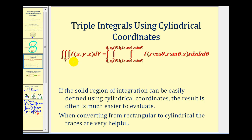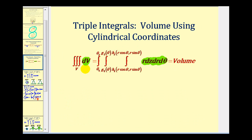The only difference is that for volume, f(x, y, z) would be equal to one. So our procedure for evaluating the triple integral is going to be the same as in the first video. It's just that now the limits of integration will define the solid region, which will then give us the volume of the solid using this triple integral.